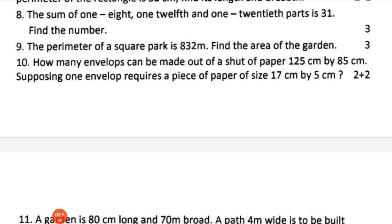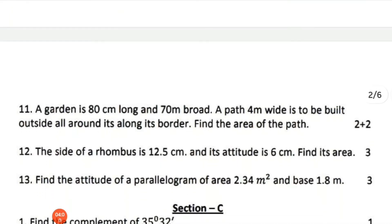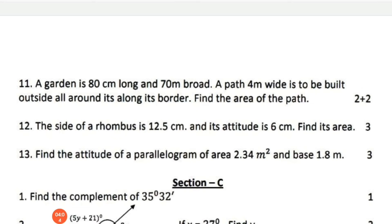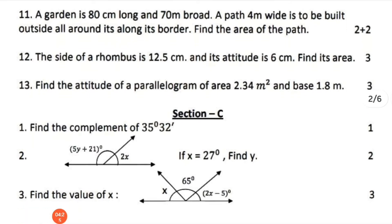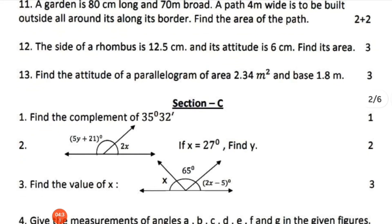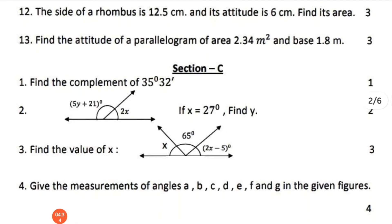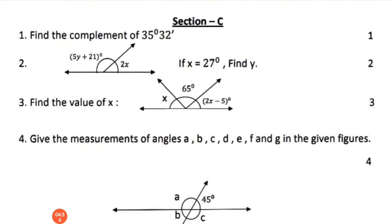The next question: a garden is 80 meters long and 70 meters broad. A path 4 meters wide is built outside around it along the border — find the area of the path. The next question: the side of a rhombus is 12.5 centimeters and its altitude is 6 centimeters — find its area. Find the altitude of a parallelogram with area 2.34 square meters and base 1.8 meters.